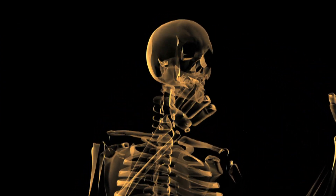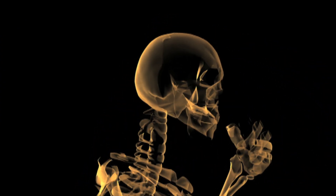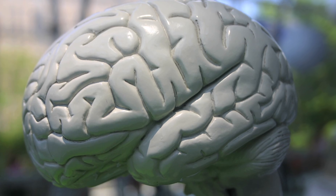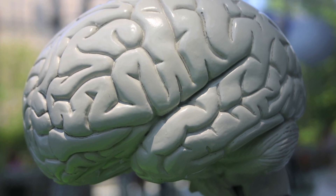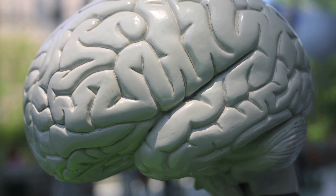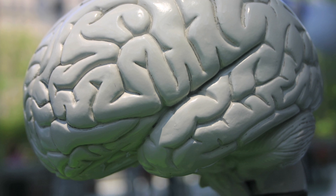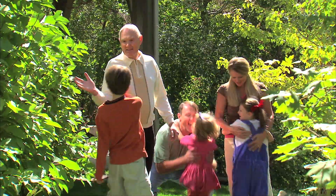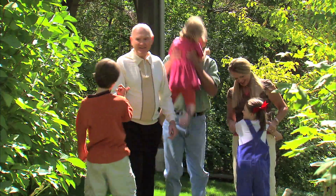Next we'll look at the brain. The brain is the organ that controls all other organs in the body. Everything our body does happens as a result of a command that comes from the brain. Most people consider it to be the most important organ of the body.